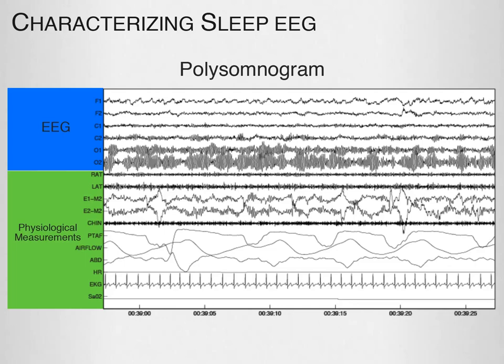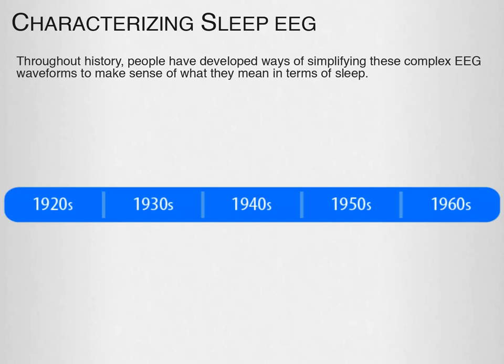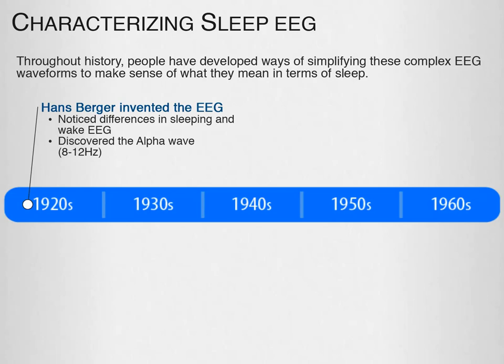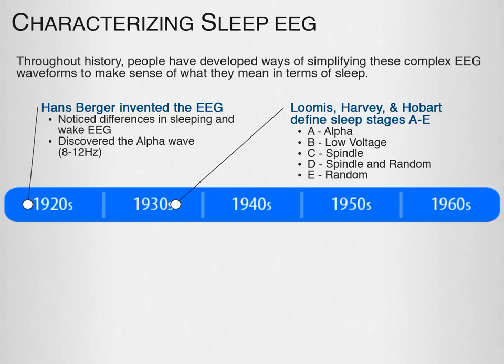Throughout history, people have developed ways of simplifying these complex EEG waveforms to make sense of sleep. In the early 1920s, Hans Berger invented the EEG and was the first to notice differences between sleeping and wake EEG, discovering and coining the concept of the alpha wave — an 8 to 12 Hz oscillation observed when subjects were awake and at rest with eyes closed. With this discovery came the need to categorize the changes, and in the 1930s, Loomis, Harvey, and Hobart defined stages A through E.